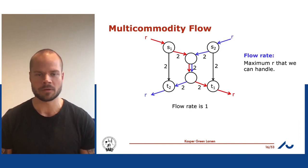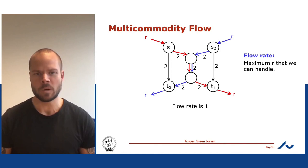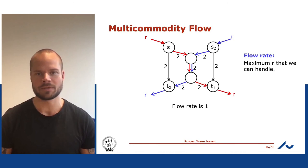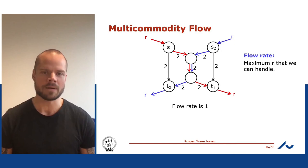Since both flows must use the middle edge going from the top-middle to the bottom-middle node, the maximum r is one: we need to transmit one unit of red flow and one unit of blue flow through that middle edge, so the flow rate is one in this directed graph.